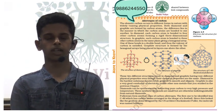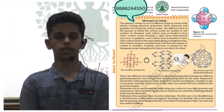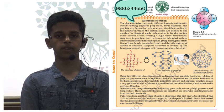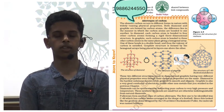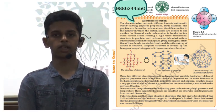In diamond each carbon atom is bonded to four other carbon atoms giving it a three dimensional rigid shape. In graphite each carbon atom is bonded to three other carbon atoms in a single plane making a hexagonal array.